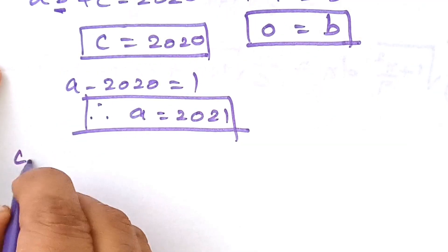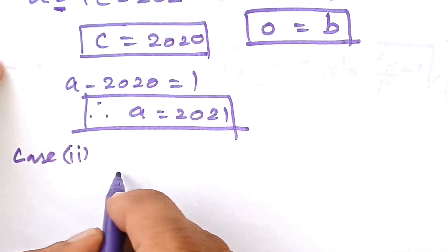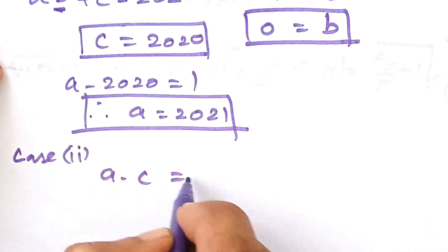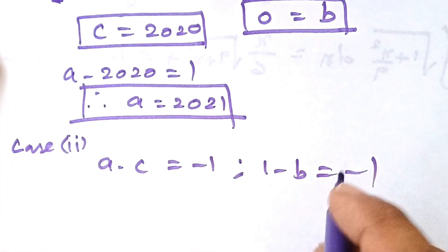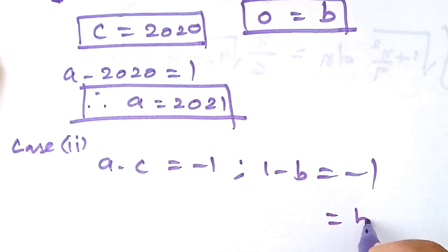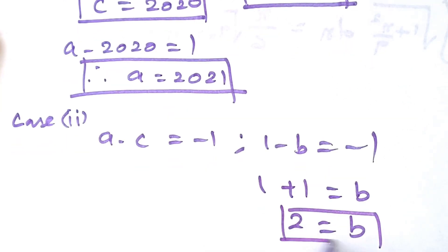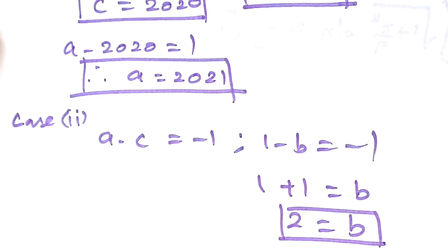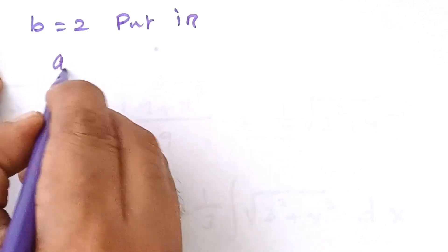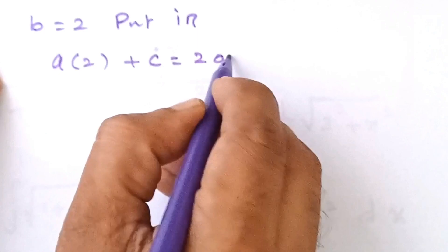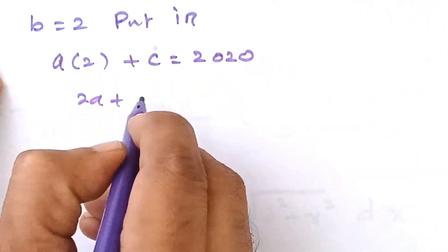Now let us go to Case 2. In Case 2, A minus C equals minus 1 and 1 minus B equals minus 1. Only then will the product give the result 1. Finding B: 1 minus B equals minus 1, so B equals 2. Substituting B equals 2 into equation 1 gives A·2 plus C equals 2020, so 2A plus C equals 2020.